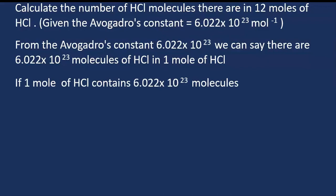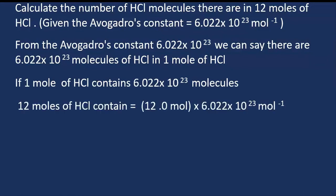If one mole of HCl contains 6.022 times 10 to the power 23 molecules, to calculate the number of molecules in 12 moles of HCl, multiply the number of moles with the Avogadro's constant, which is 12 times 6.022 times 10 to the power 23. This gives 7.2264 times 10 to the power 24.